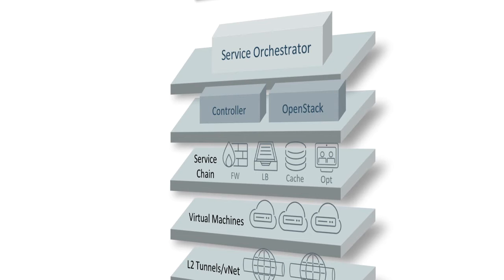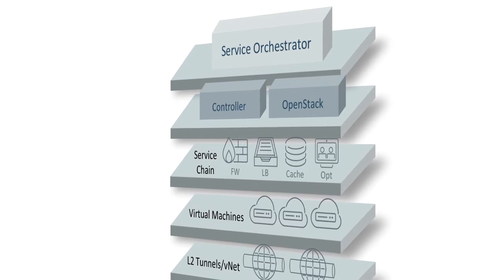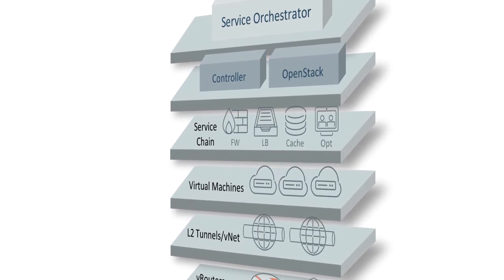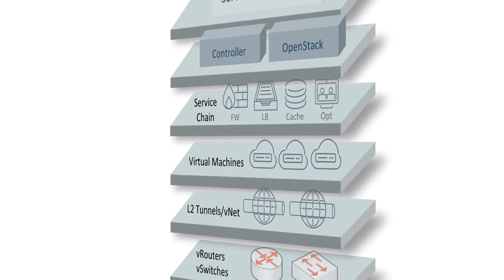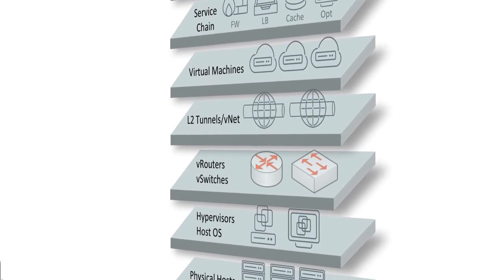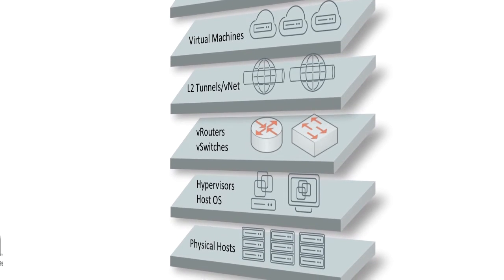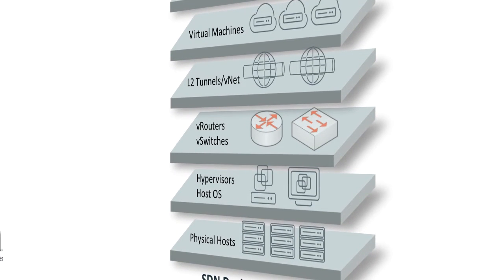If we take a look at the stack, we'll see the service chain layer making up virtual network functions like firewalls and load balancers, and optimizers for video or WAN traffic. These are all supported by even more layers consisting of virtual machines, virtual routers and switches, layered on top of hypervisors — getting even more complex.